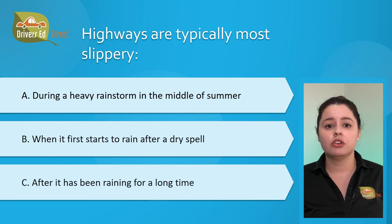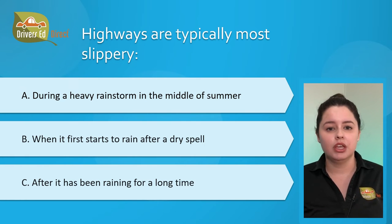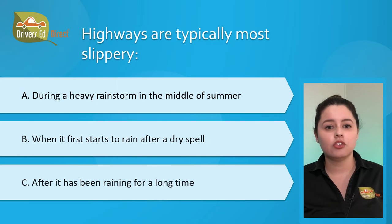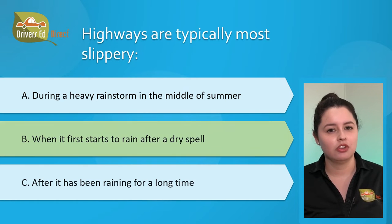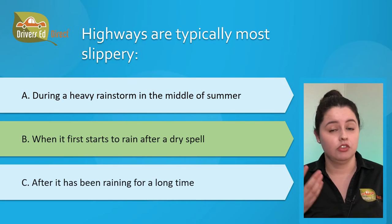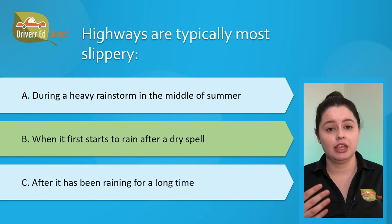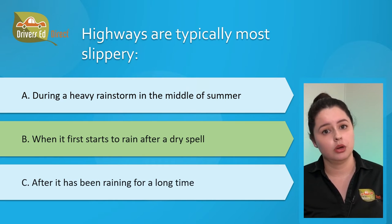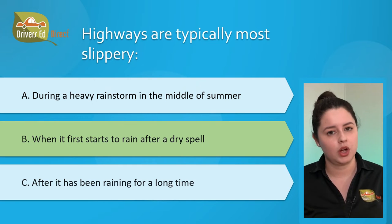Question number eight: highways are typically most slippery. A) during a heavy rainstorm in the middle of summer, B) when it starts to rain after a dry spell, or C) after it has been raining for a long time. The correct answer is B, when it first starts to rain after a dry spell. Many road pavements are most slippery when it first starts to rain or snow because oil and dust have not yet washed away. Heat causes oil in the asphalt to surface, making the road slippery until it's washed off.